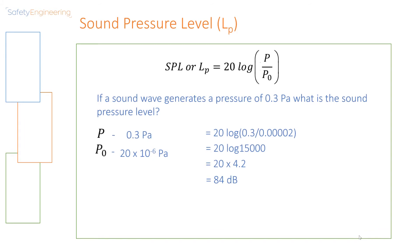Let us now apply the formula using an example. If a sound wave generates a pressure of 0.3 pascals, what is the sound pressure level? All we have to do is substitute the relevant values into our equation. By doing so, we are going to arrive at an answer of 84 decibels. So for P, we substitute that with 0.3 pascals, and for P naught, we substitute that with 20 micropascals.